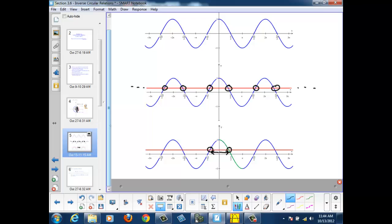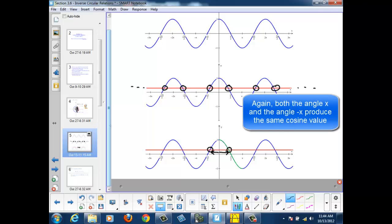So, if we have an answer on the principal branch, we'll have the negative of the answer as well. Automatically, we've just generated two solutions.